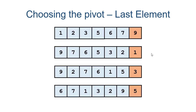If we choose the last element for the partition, we run into the same problem. If the array is sorted or reverse sorted, everything ends up on one side of the partition. In another arrangement, three gives us one and two on the left and nine, seven, six, and five on the right — a decent split. And in one case, five gives a very nice split with three smaller and three larger.